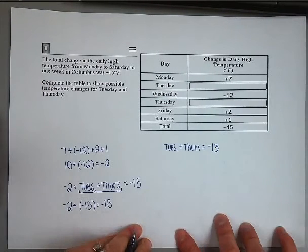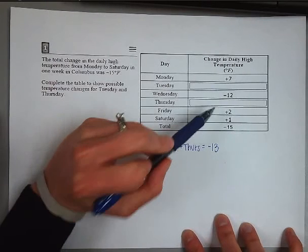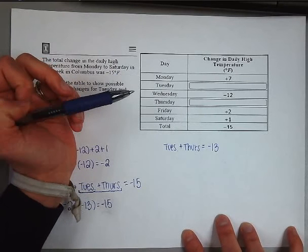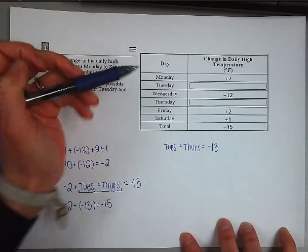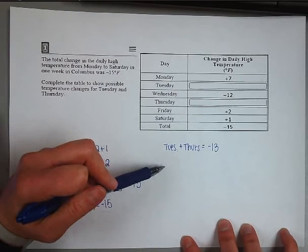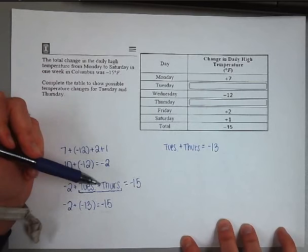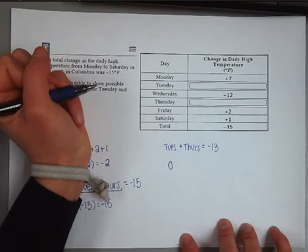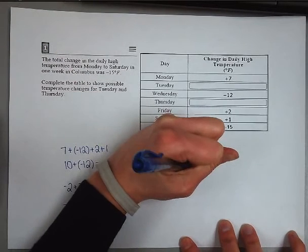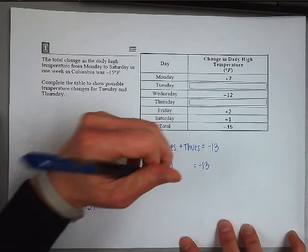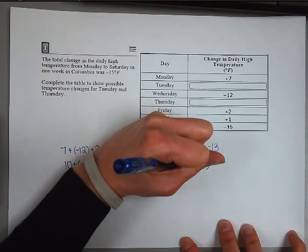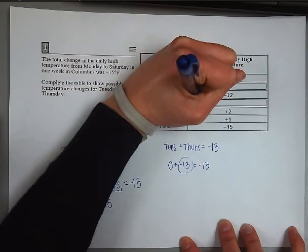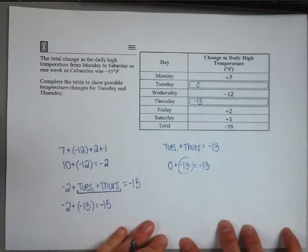Now we need to think about some possibilities for temperature changes for Tuesday and Thursday — numbers that add together to give negative thirteen. There are plenty of different possibilities. I like to choose one value as zero because it makes it easier. If the change on Tuesday is zero, meaning the temperature didn't change at all, then the change for Thursday would be negative thirteen. So one possibility is zero for Tuesday and negative thirteen for Thursday.